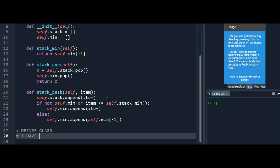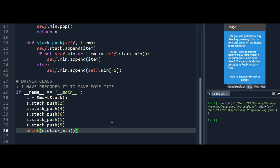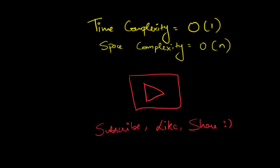So this is the solution. To spare some time, I pre-coded the main function. The output will be one. The time complexity is O(1), but unfortunately the space complexity is O(n) too, because we created an auxiliary stack. So that was it. If you've liked the video, please hit the like button and subscribe to this YouTube channel. Till next time, cheerio.